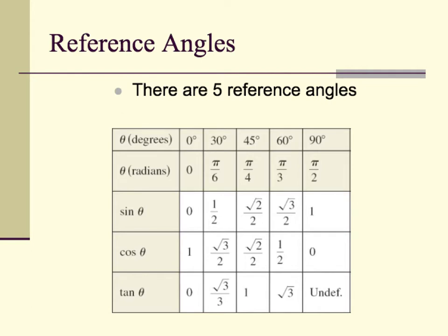Here we have a chart that summarizes everything we need to know for the first quadrant. We have all the degree angles, the same angles in radians, and the corresponding values for sine, cosine, and tangent for every angle. This summarizes everything we need to know for the first quadrant. We're going to refer back to this when answering questions about angles in other quadrants.